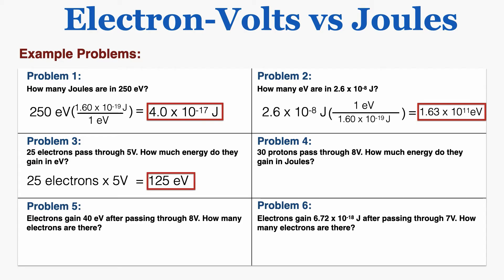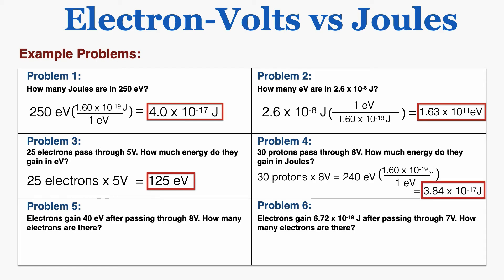Problem four says 30 protons pass through 8 volts — how much energy do they gain in joules? Protons have the same magnitude of charge as electrons, so they gain energy the same way. That's 30 protons times 8 volts, giving 240 electron volts. Converting to joules using the conversion factor gives 3.84 times 10 to the negative 17th joules.